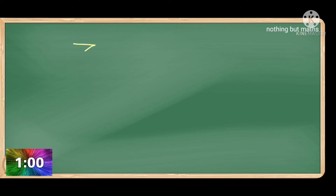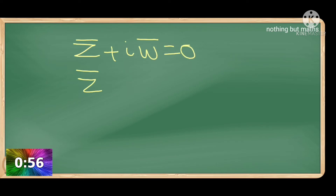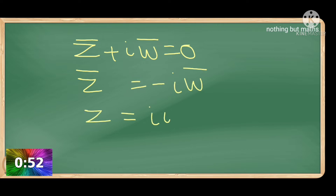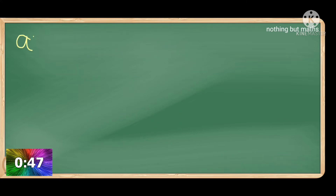Z̄ + iω̄ = 0, therefore Z̄ = -iω̄. Taking conjugate on both sides, Z = iω, therefore ω = Z/i.